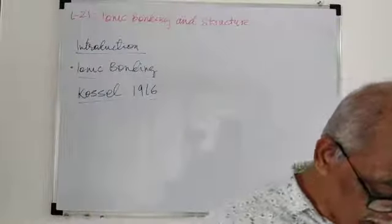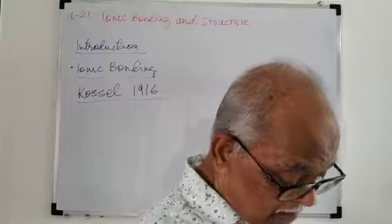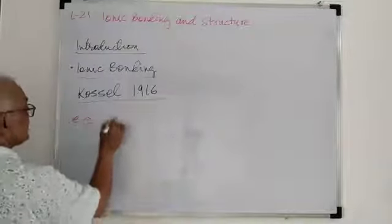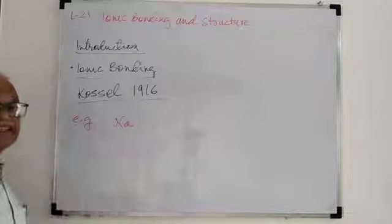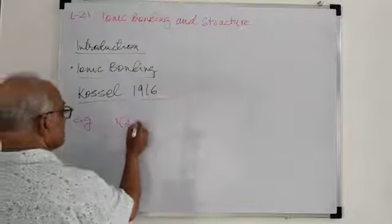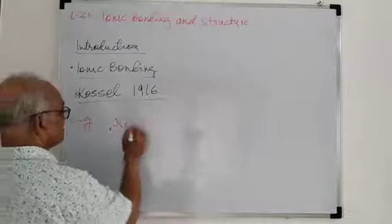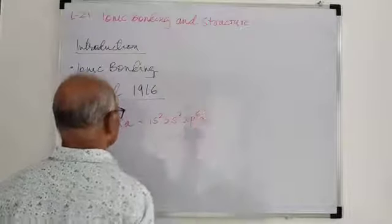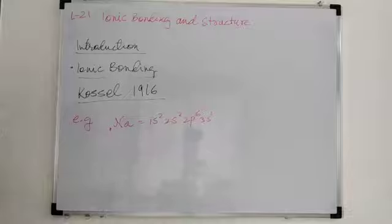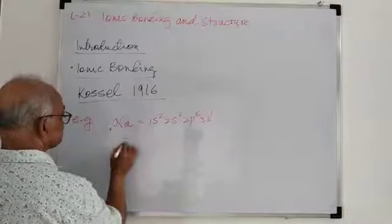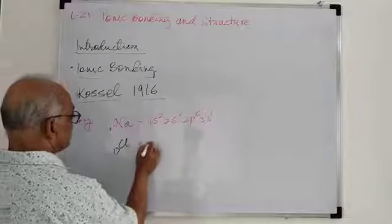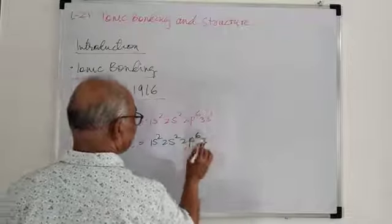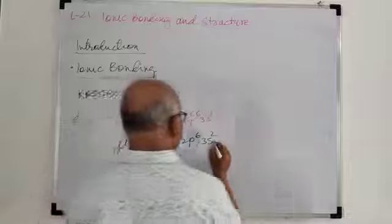We can understand this concept using some examples. For example, we can see sodium, Na, with atomic number 11. Its configuration is 1s2, 2s2, 2p6, and 3s1. Another is chlorine, with atomic number 17. It has configuration 1s2, 2s2, 2p6, 3s2, 3p5.